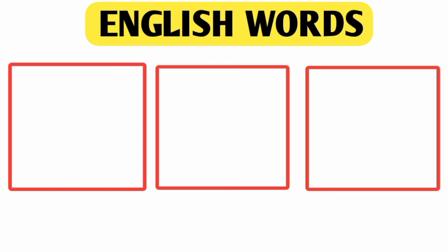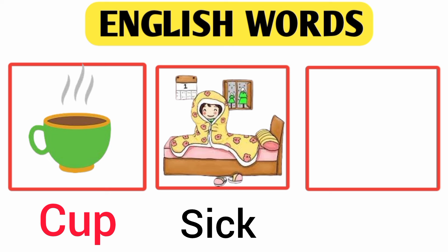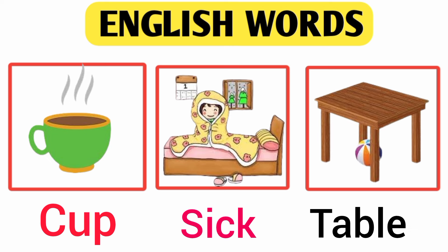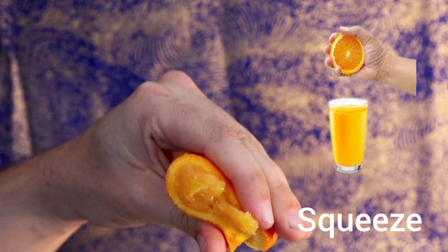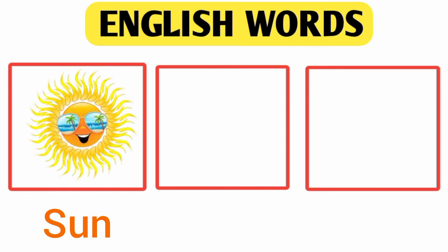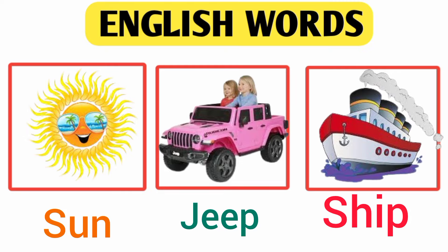English words. Cup. This is cup. Sick. This is sick. Table. This is table. Squeeze. Sun. Jeep. And sheep.